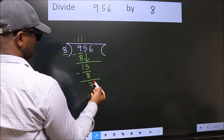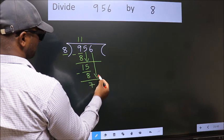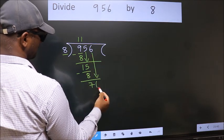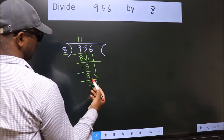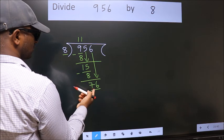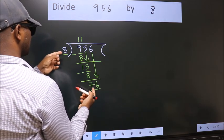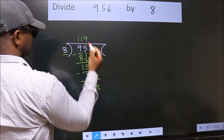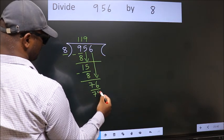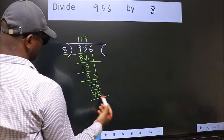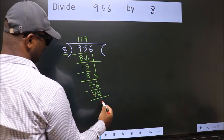After this, bring down the beside number. So, 6 down. 76. A number close to 76 in 8 table is 8 nines 72. Now, we subtract. We get 4.